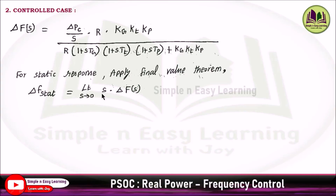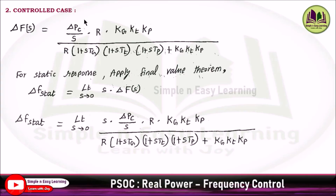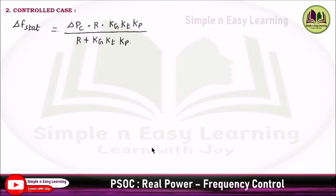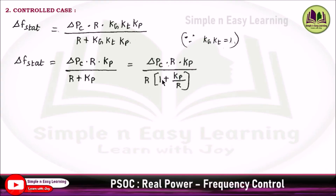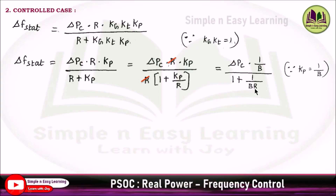For static response, apply the final value theorem: Δf_stat = lim(s→0) s·ΔF(s). Substituting into the previous equation, s and s cancel, and remaining s terms in the denominator are substituted with 0. For static response, KG = KT = 1, so the equation reduces to Δf_stat = ΔPC·R·KP / (R + KP). Taking R out of the denominator gives (1 + KP/R), and R cancels.